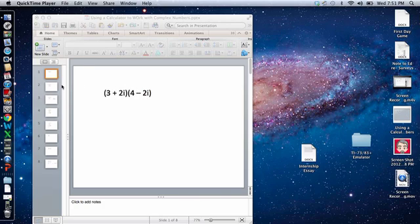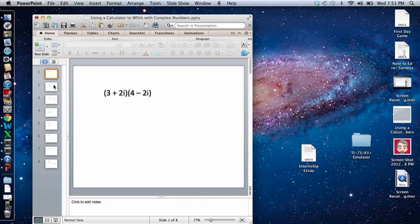When I do that, I get this result. The way I got there was I multiplied the 3 times the 4 and I got 12. I multiplied the 3 times the negative 2i to get negative 6i. Now I'm done multiplying by the 3, so I'm going to move over here and multiply the 2i times the 4 to get positive 8i, and then the positive 2i times the negative 2i to be negative 4i squared.